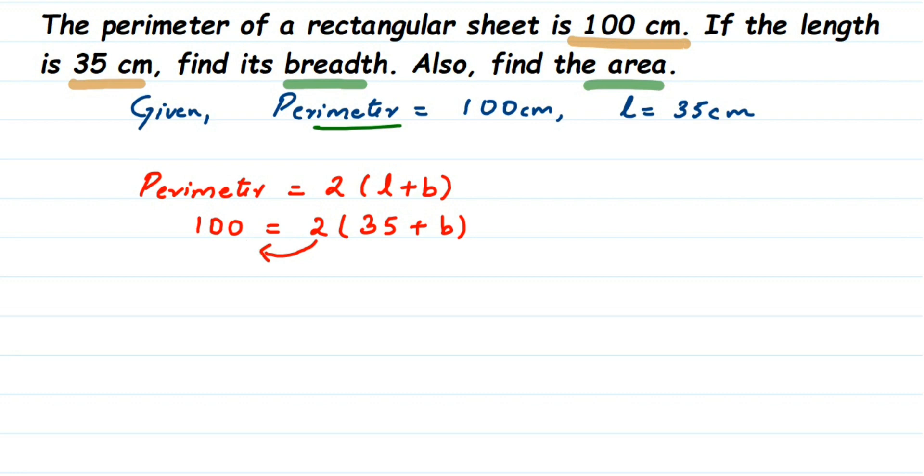It's 2 into L plus B, right? So 2 is under multiplication. When it goes to the other side it goes to division. So this will become 100 divided by 2 equals 35 plus B. Now cancel them - we got 50.